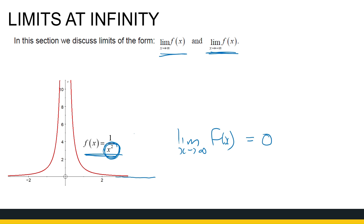I've got a horizontal asymptote there at y equal to zero. Similarly, the limit as x approaches minus infinity of this function is also zero, because as x gets very, very small, those values go towards zero.